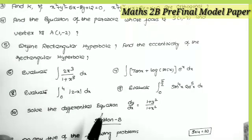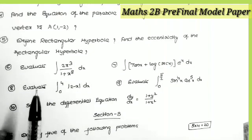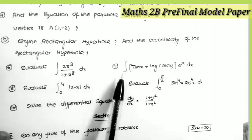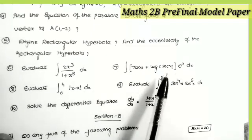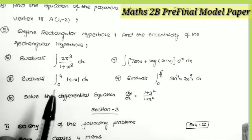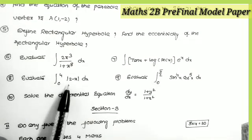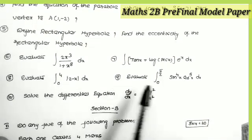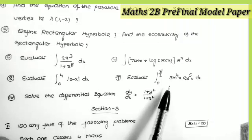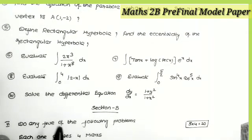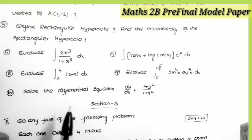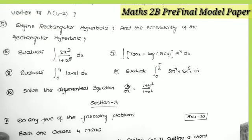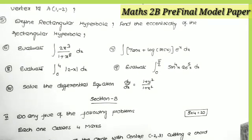Questions one through five are from the geometry part. The sixth and seventh questions are from integration. The sixth: evaluate integral of 2x³ / (1 + x⁸) dx. The seventh: integral of (tan x + log(sec x)) · eˣ dx. The eighth question is from definite integrals: integral from 0 to 4 of |2 − x| dx. The ninth: evaluate integral from 0 to π/2 of sin⁴x · cos⁵x dx. The tenth question is from differential equations: solve dy/dx = (1 + y²) / (1 + x²).